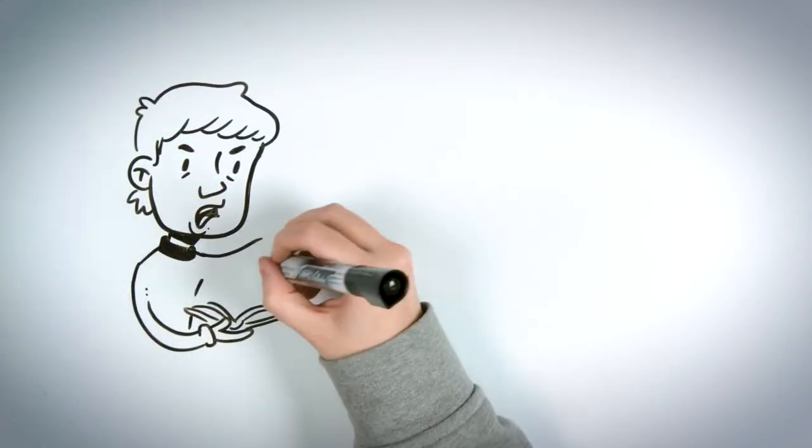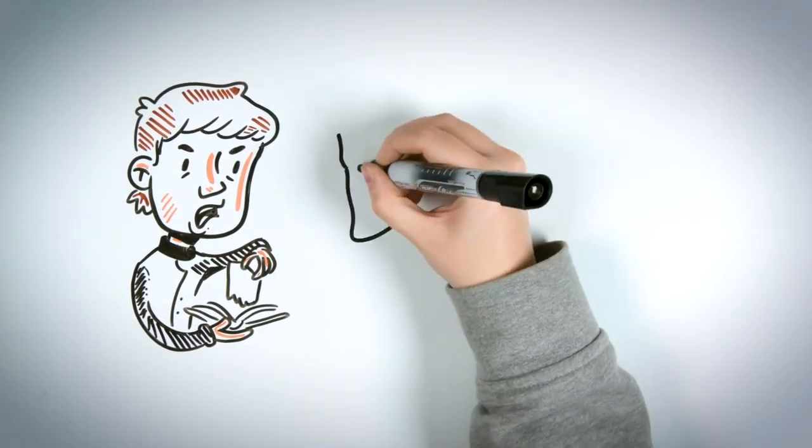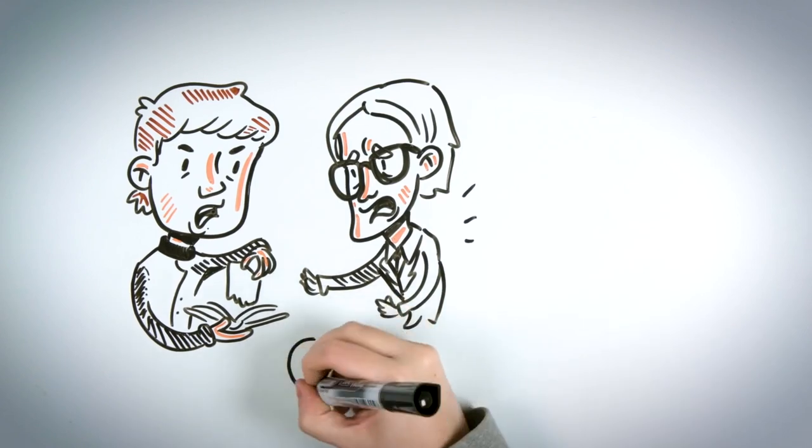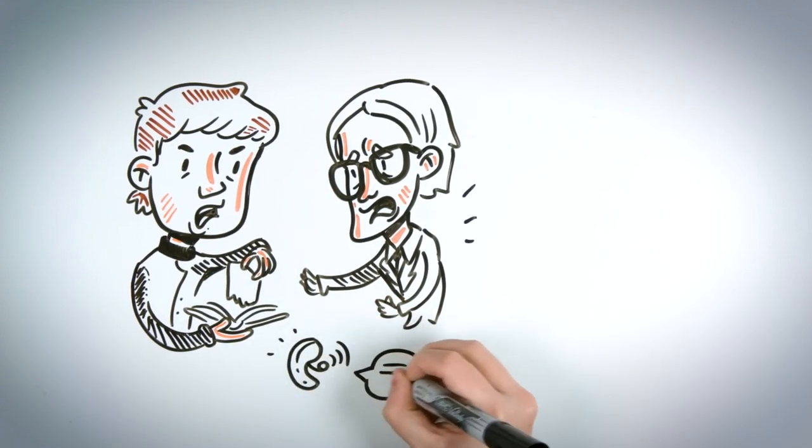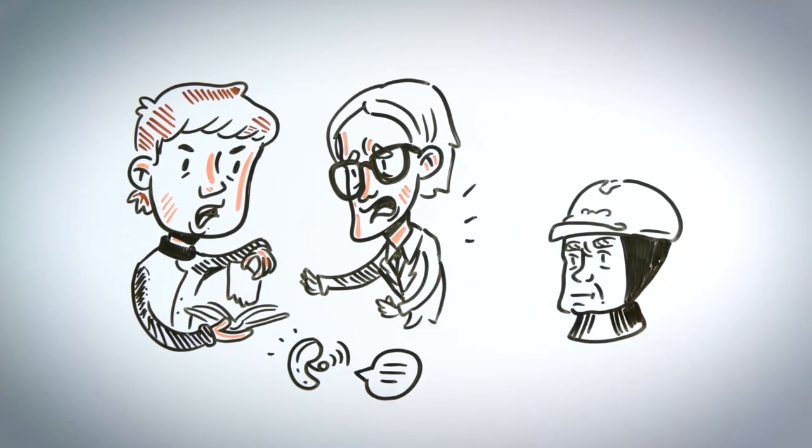Montag responds to Faber's cowardice by tearing out pages of the Bible until the teacher agrees to help him. Faber gives him a radio for Montag to put in his ear and hear Faber's instructions on how to act in front of Beatty. Montag decides to take the risk of giving the captain a book other than the Bible.